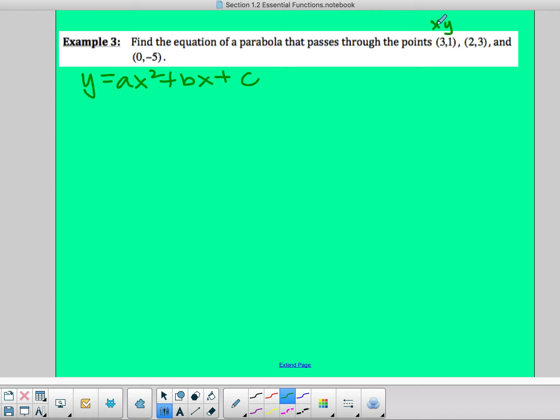So here is x, and here is y. So wherever there's an x, I plug in three, and wherever there's a y, I plug in one, into my standard form. So I have one equals a. Now x is three squared plus b times my x, which is three, plus c.